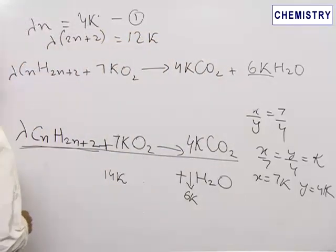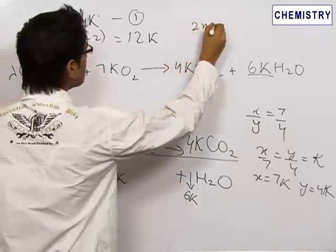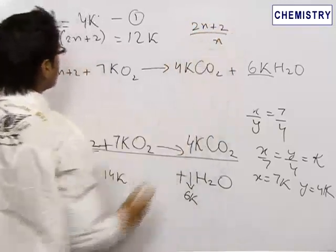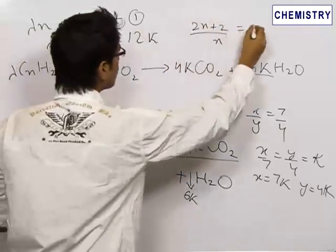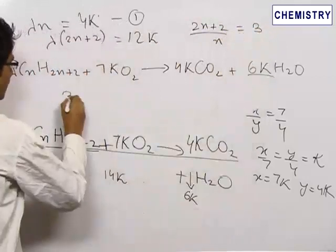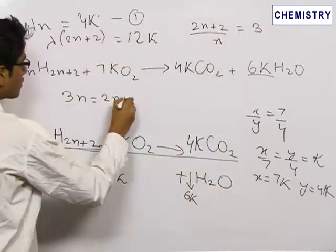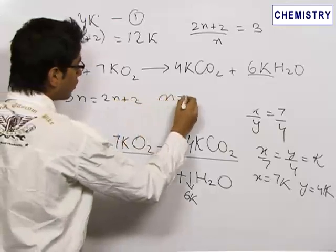Now dividing both the equations we get 2n plus 2 upon n is equal to 12 upon 4 which is equal to 3. So we get 3n is equal to 2n plus 2. Hence our n is equal to 2.